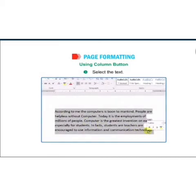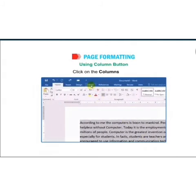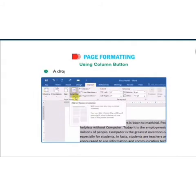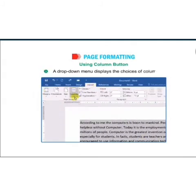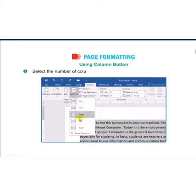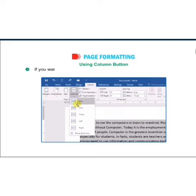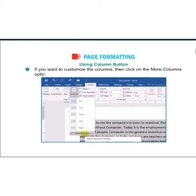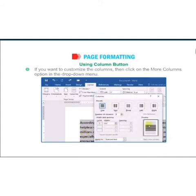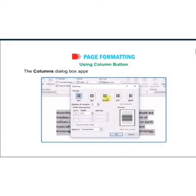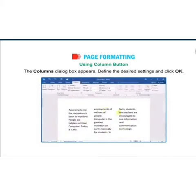The easiest way to create a multi-column document is to use the Columns button on the Layout tab in the Page Setup group. Select the text, click on the Columns button, and a drop-down menu will display the column choices. Select the number of columns you would like to insert. If you want to customize the columns, click on the More Columns option in the drop-down menu and a column dialog box will appear. Define the desired settings and click OK.